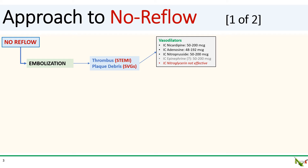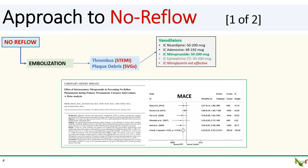IC adenosine is also useful, and there is some evidence that IC epinephrine at doses from 50 to 200 micrograms could be effective. I am particularly fond of IC nitroprusside, which I have found to be very effective in reversing no reflow. There is actually a meta-analysis suggesting that IC nitroprusside may be effective in reducing MACE in these cases compared to non-nitroprusside agents.